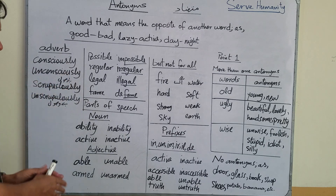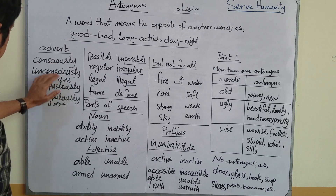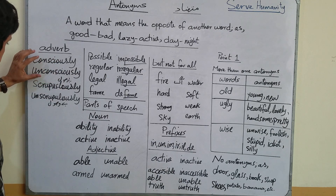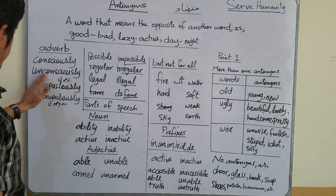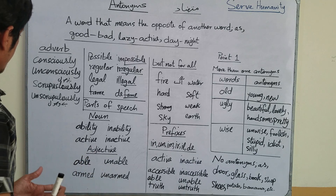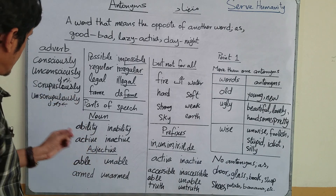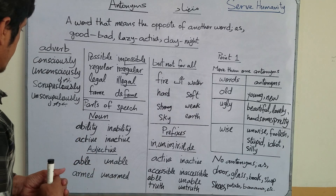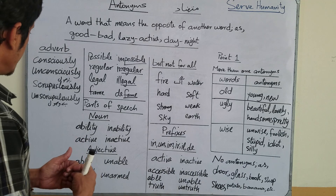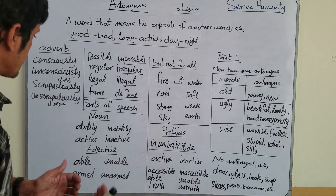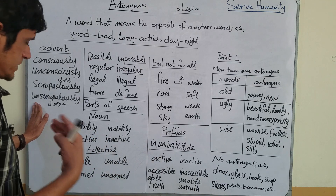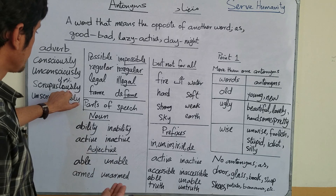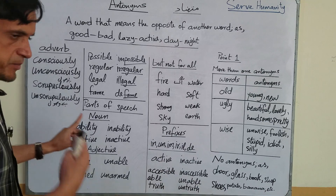Similarly, we can form antonyms in adverbs. For example, 'consciously' and 'unconsciously.' Also, 'scrupulously' — its antonym is 'unscrupulously.' Scrupulously means 'باوصول' (principled/with principles), so unscrupulously means 'بے اصول' (unprincipled). You can also think of 'principally' and 'unprinciplally' as synonyms in meaning for this pair.